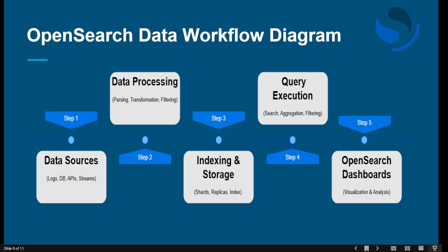Step two is processing the data. Before storing, OpenSearch processes the data through parsing, transformation, and filtering. Parsing breaks the data into structured parts for easy search. Transformation modifies data — such as converting to lowercase. Filtering removes unwanted data. Step three is storing the data, which includes indexing. OpenSearch organizes and stores data using indexes rather than raw files, making searches faster. It also creates shards — small portions of data — and replicas to improve performance and reliability.